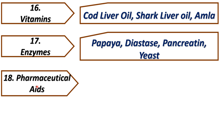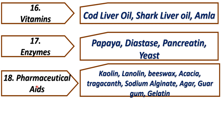The eighteenth subcategory is pharmaceutical aids. Pharmaceutical aids means substances which do not have any therapeutic value but are used in compounding or manufacturing of pharmaceutical formulations. We will study kaolin, lanolin, beeswax, acacia, tragacanth, sodium alginate, agar, guar gum, and gelatin.